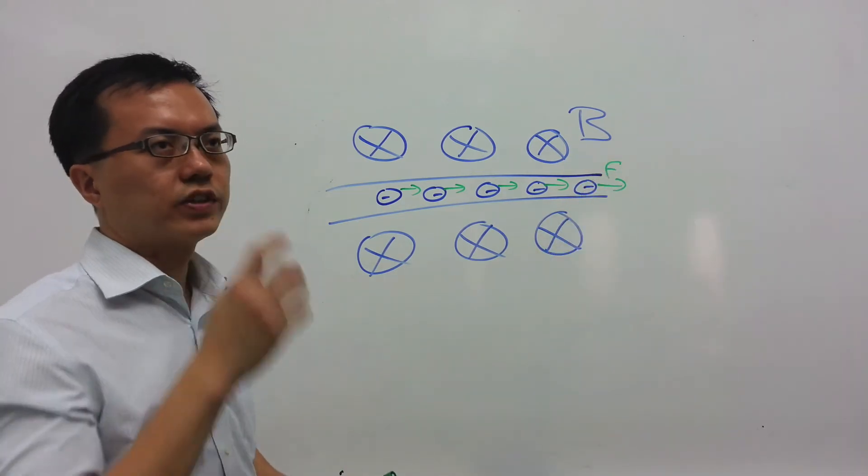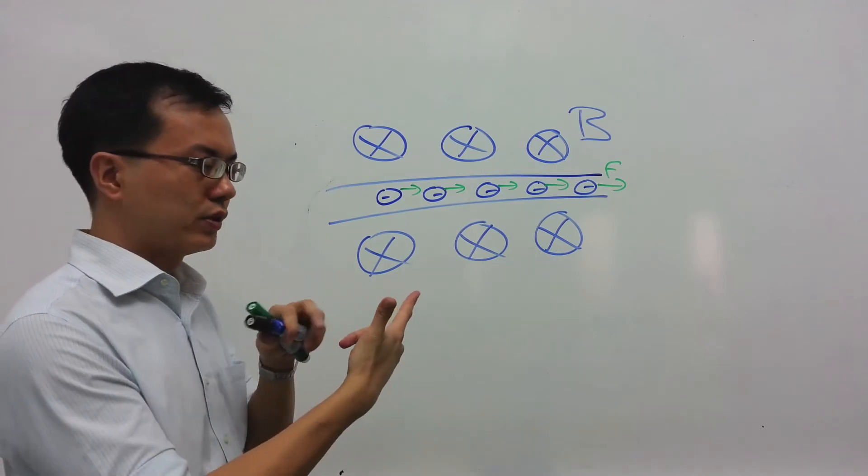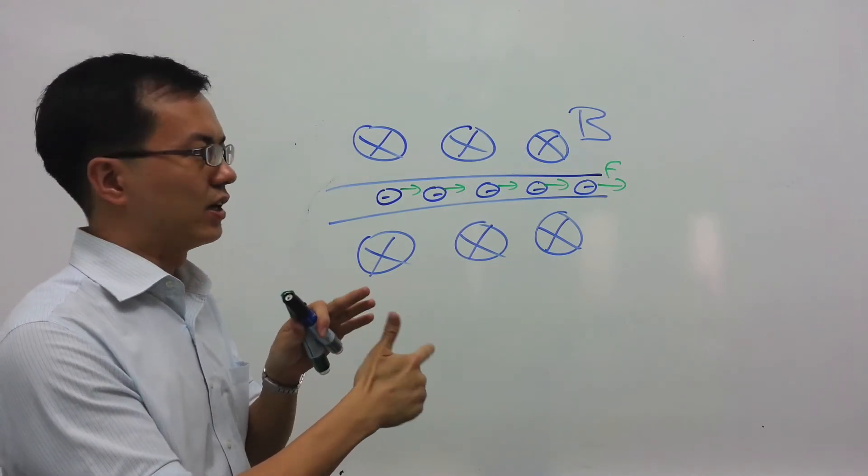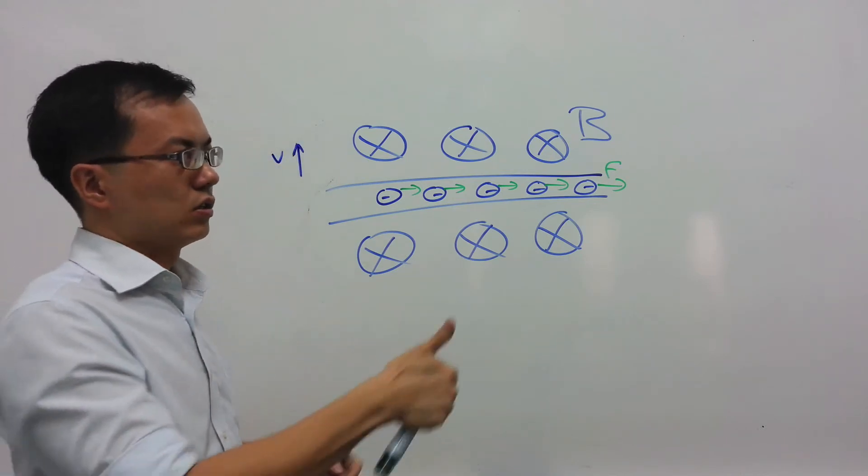We can use Fleming's right hand rule to figure out where the direction of EMF is induced. Fleming's right hand rule requires you to use the thumb as the direction of the motion. We have already mentioned that the motion is upward, so it's going up.